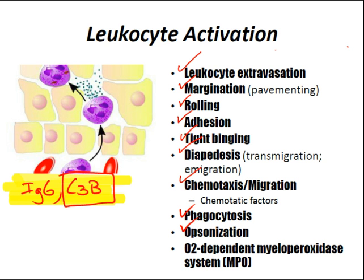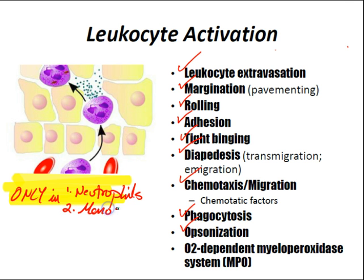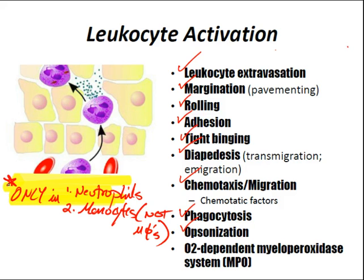Intracellular killing is mediated by the oxygen-dependent myeloperoxidase (MPO) system in neutrophils and monocytes — not macrophages. This is very important. The most important intracellular microbial process is this MPO system.